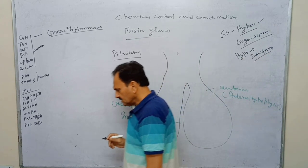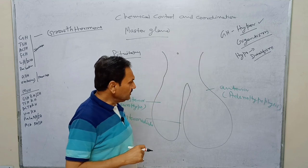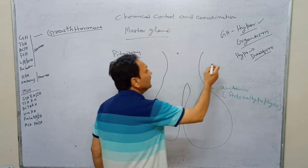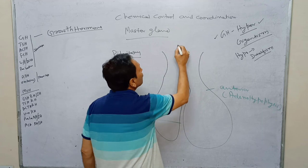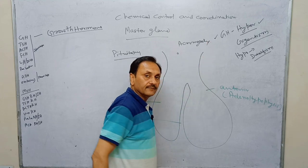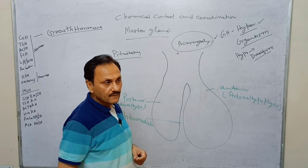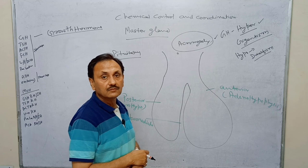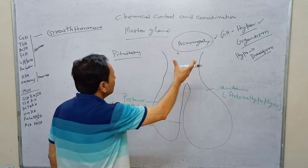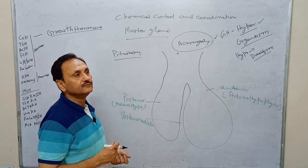Both gigantism and dwarfism occur during the growing age. If a person is already an adult and still has excess growth hormone, that is called acromegaly. In acromegaly, the skull and limbs are mainly affected — the limbs become enlarged. So growth hormone is responsible for growth in the growing child.